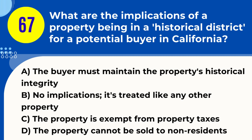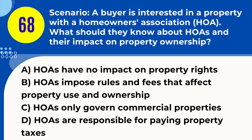Question 67. What are the implications of a property being in a historical district for a potential buyer in California? A. The buyer must maintain the property's historical integrity. B. No implications, it's treated like any other property. C. The property is exempt from property taxes. D. The property cannot be sold to non-residents. Answer: A. Explanation. Buying a property in a historical district in California carries the implication that the buyer must maintain the property's historical integrity. This often means adhering to strict guidelines for renovations, repairs, and alterations to preserve the historical and architectural significance of the property and the district.